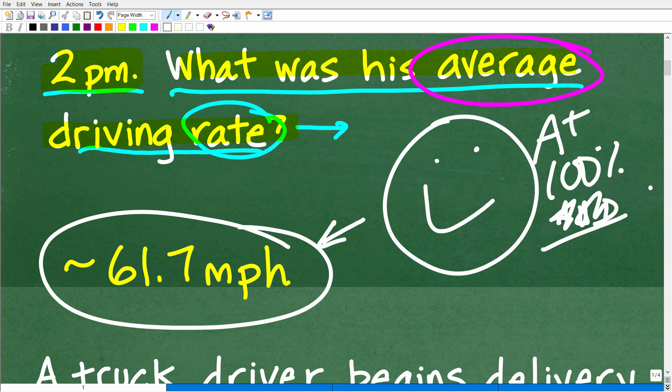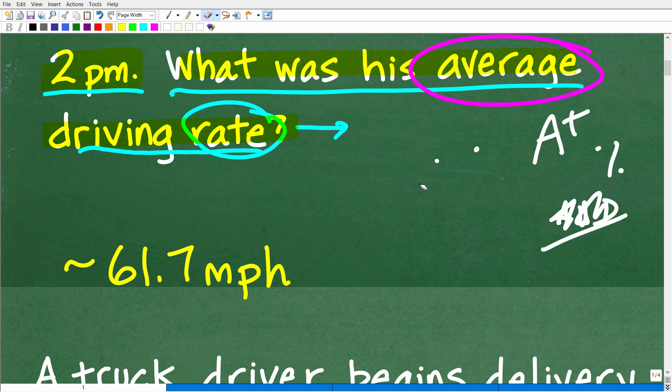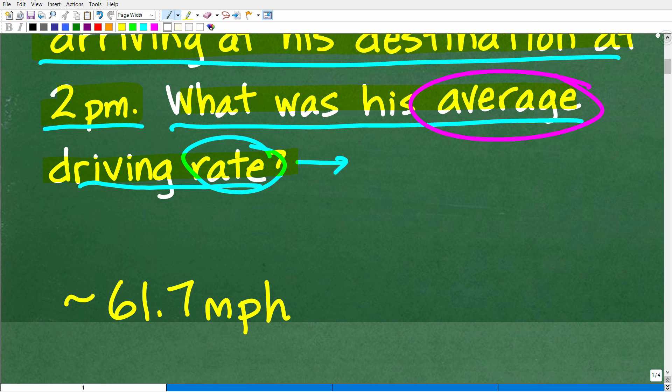These type of problems in math are often referred to as motion problems, but there's two things that we need to understand about this problem, one of which is a formula. And if you don't know what formula that is, of course, I'll show you that. So let's go ahead and get into this right now. Okay, now before I even start, there's actually a very important word in this problem, and that is average.